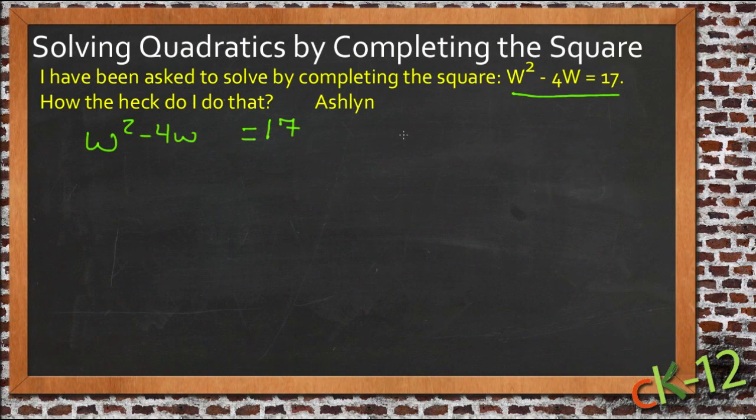Now the rule or the tool for completing the square is one half b squared. So what we want to do is take b, which is the coefficient of our w or our x term, whichever your variable happens to be, and we want to take half of that and square it.